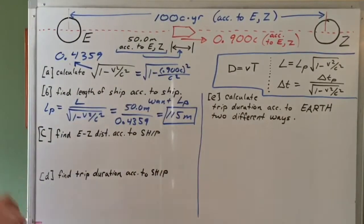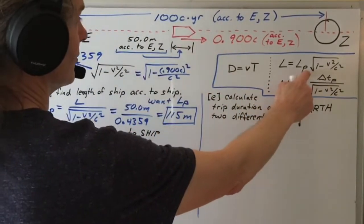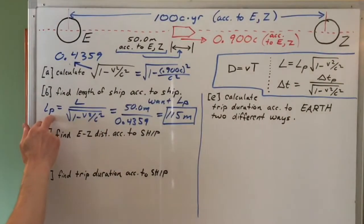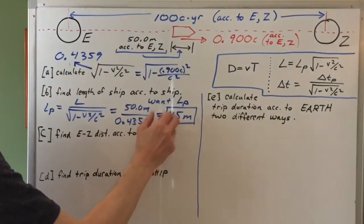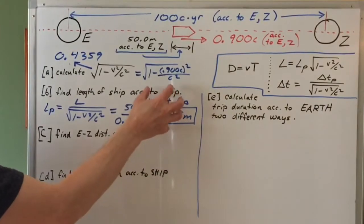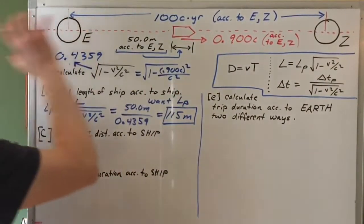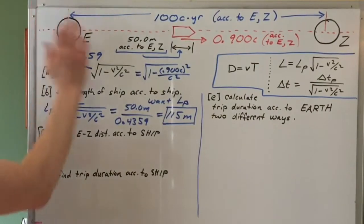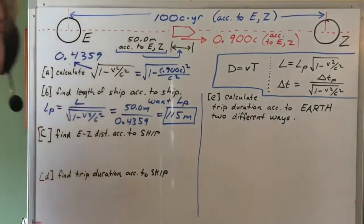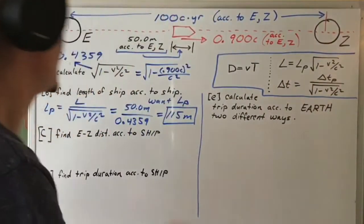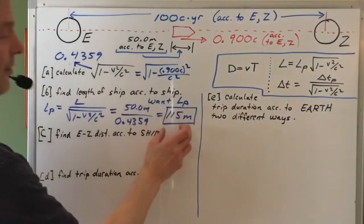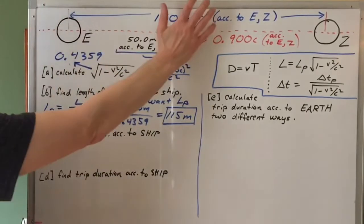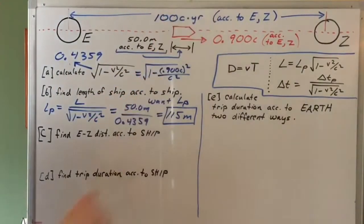Let's check: the proper length should be the longest length in the problem for a particular object. We got 115 meters as the proper length — the length of the ship according to people on the ship. Since the ship is zooming past Earth, people on Earth find it contracted down to 50 meters. Both are real lengths: for people on the ship, 115 meters is real; for people on Earth, the ship really is 50 meters long.